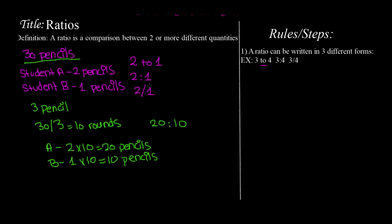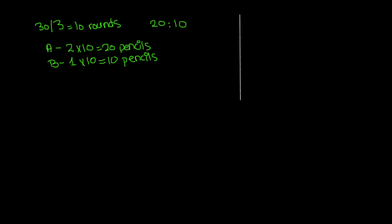Now let's move on to a second example. The concept is the same, but now the teacher is giving away 48 pencils. Instead of two students, she has three: student A, student B, and student C. She gives student A three pencils, student B two pencils, and student C one pencil per round. So we write the ratio as three to two to one.